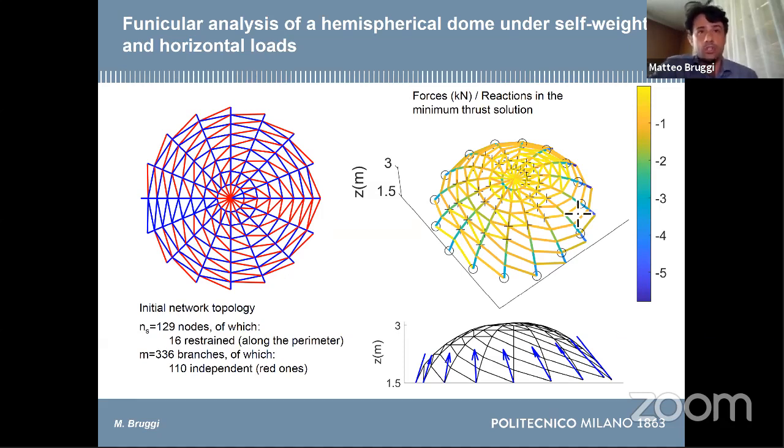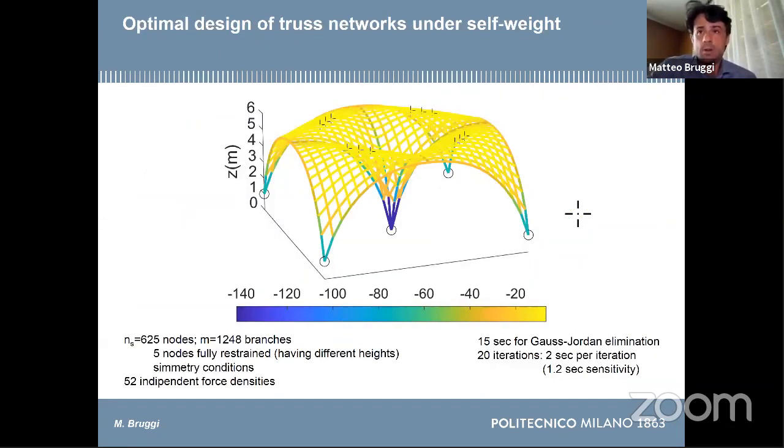If you interpret the lower bound and upper bound enforced over the coordinates as a definition of the design domain, you can use this method for form-finding. It is not a problem to deal with self-weight, which is a design-dependent load, because these gradient-based methods are based on analytical sensitivity, and it is quite easy to compute the analytical sensitivities also in this case.